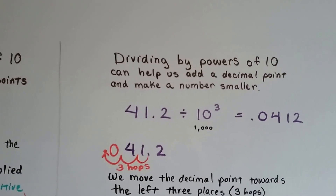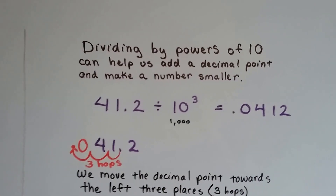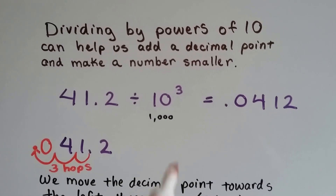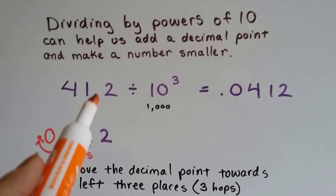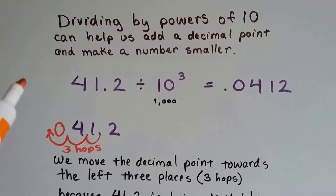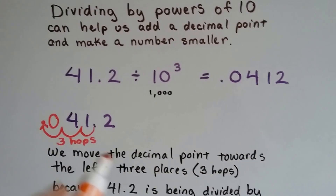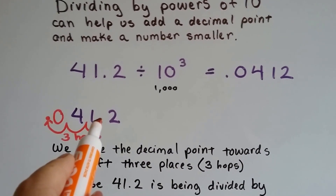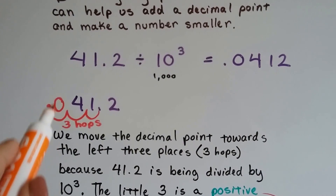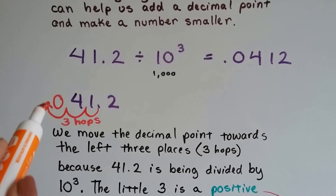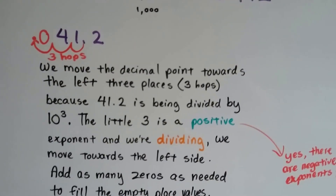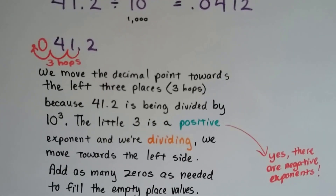Dividing by powers of 10 can help us add a decimal point and make a number smaller. So 41.2 divided by 10 to the third power, which is 10 times 10 times 10, or 1,000 — we're going to move our decimal point to the left. When we multiplied, we moved it to the right; when we divide, we move it to the left. Our number becomes 0.0412. The decimal was here, and we did three hops because of that 3 exponent — 1, 2, 3 — and we had to add a zero as a place value holder between the decimal point and the 4.